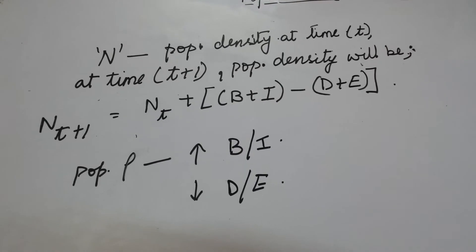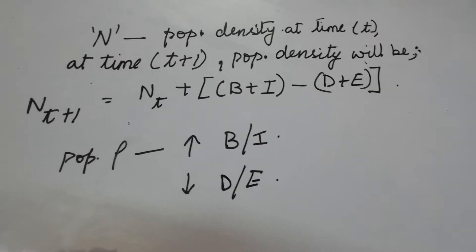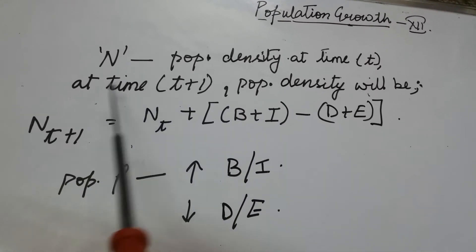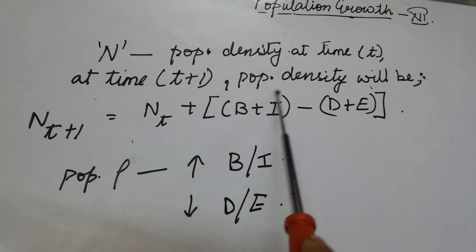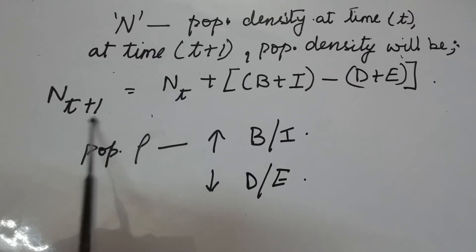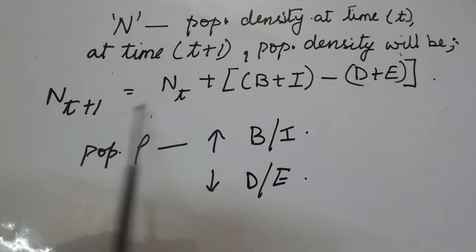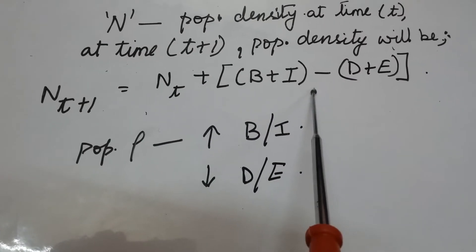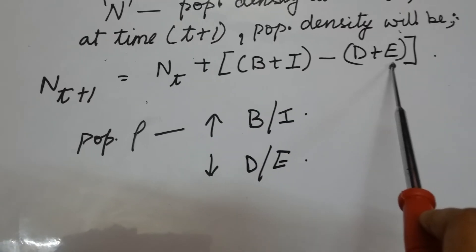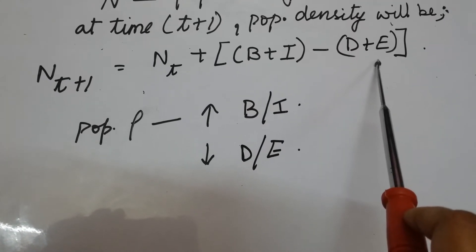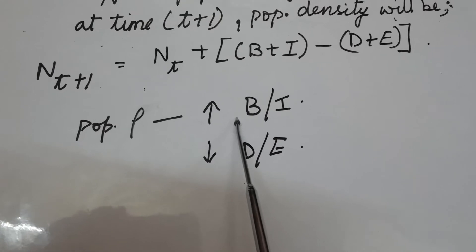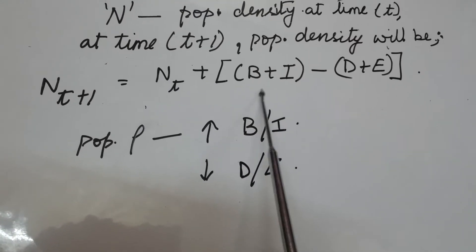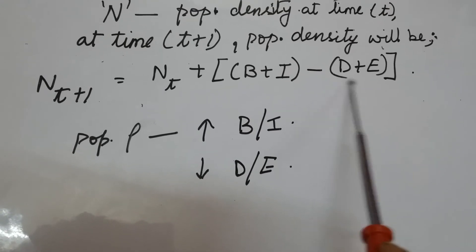Keeping these four factors in consideration, we can derive our equation. Here, N is the population density at time t, and at time t1, the population density will be Nt+1 equals Nt plus birth rate plus immigration minus death rate minus emigration. Population density increases if the number of births plus immigrants is greater than the number of deaths and emigrants.